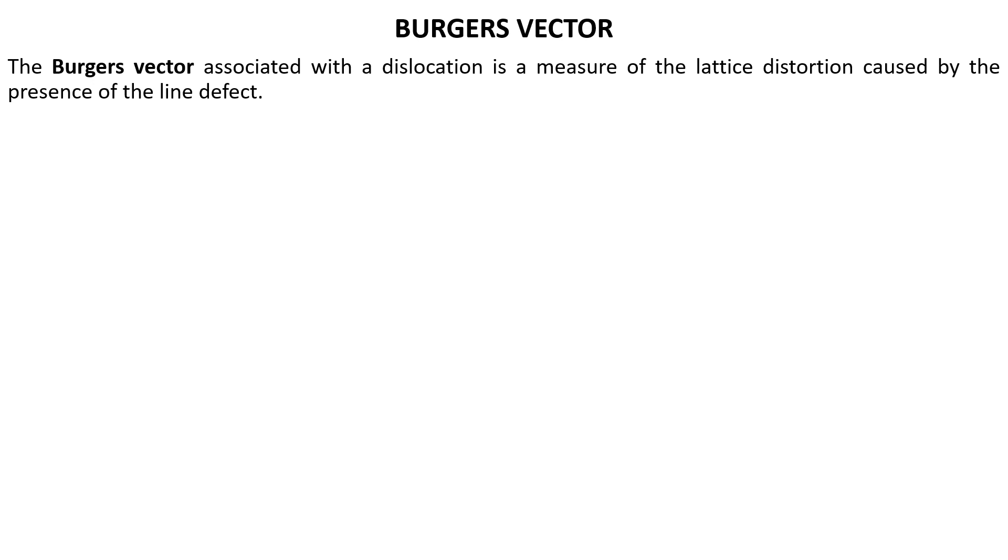Burgers vector helps to quantify the strain energy associated with the dislocation. Larger the Burgers vector, the more strain energy is stored in the crystal, and it also influences how materials deform, especially under mechanical stress, which impacts properties like strain, ductility, and hardness.